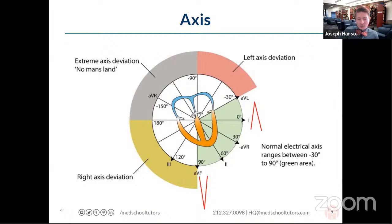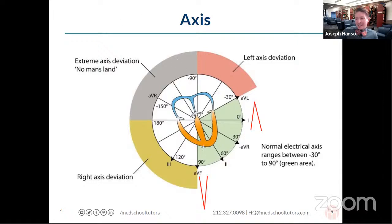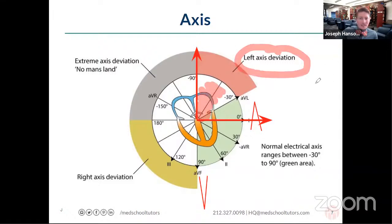The majority of answers are saying that a negative deflection in AVF means we're pointing away from AVF, and a positive deflection in lead one means we're pointing towards lead one. The directionality of our electricity is pointing up and to the left — predominantly left axis deviation. Using lead one and lead AVF as cardinal directions, those are the only two leads you commonly need to determine axis on your exams.